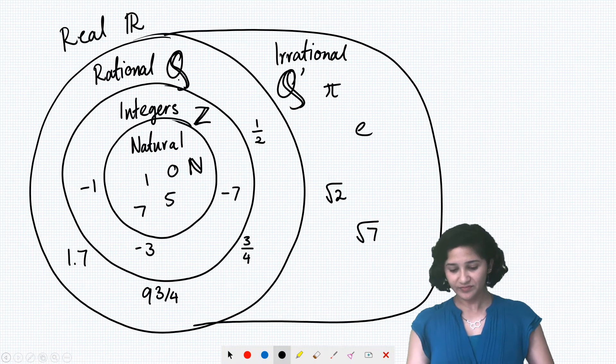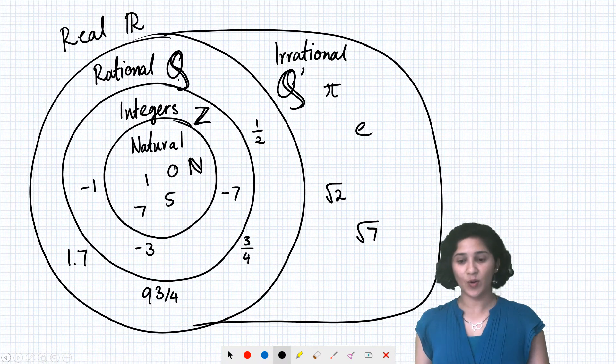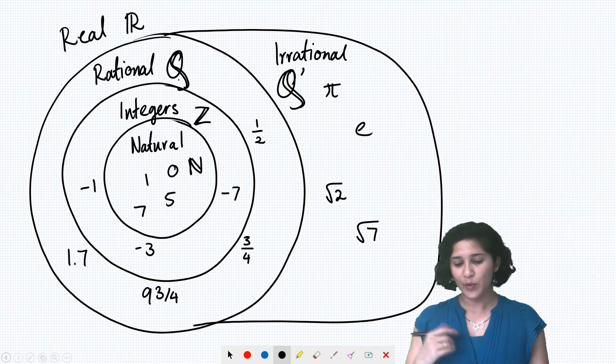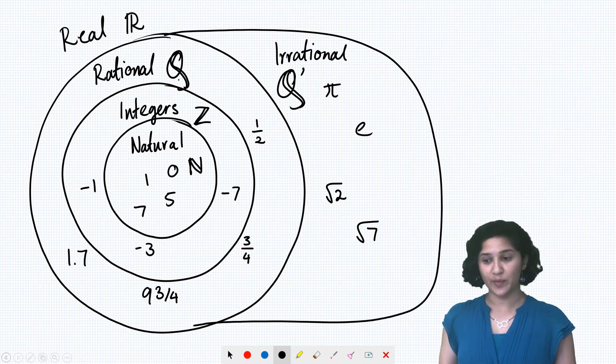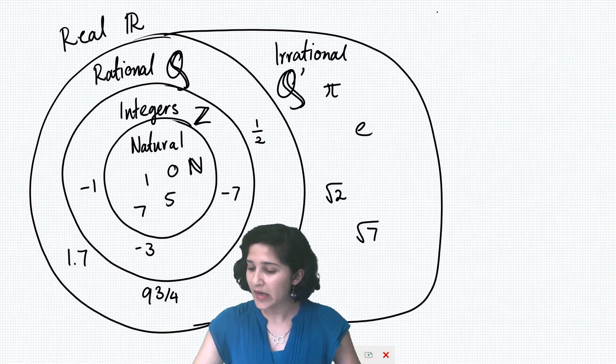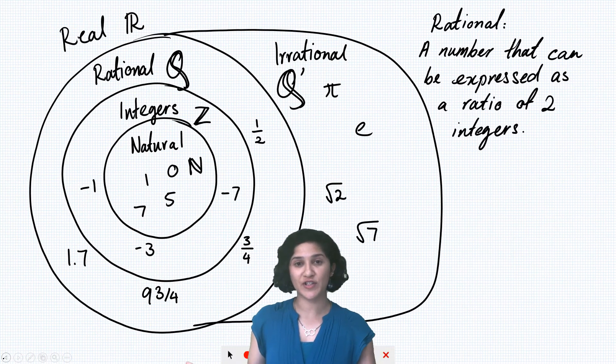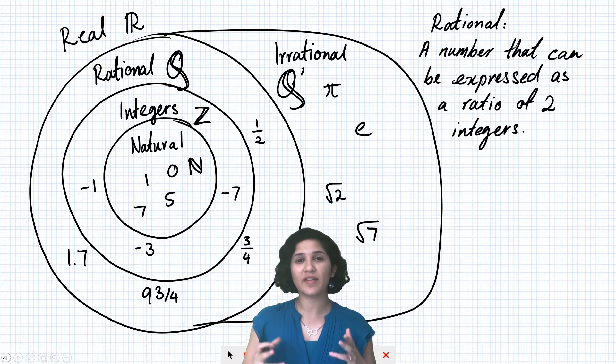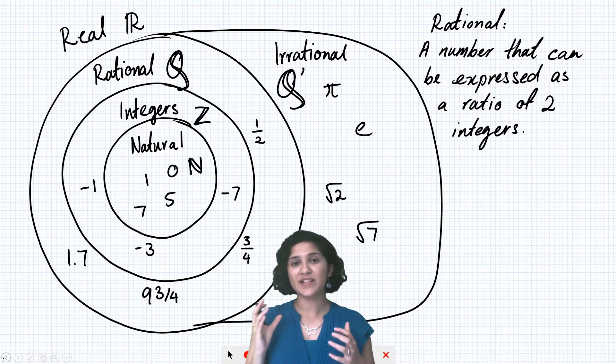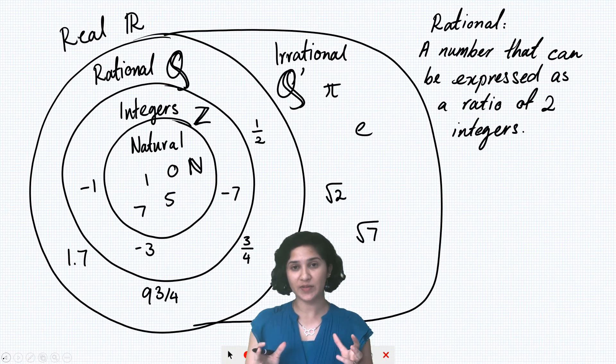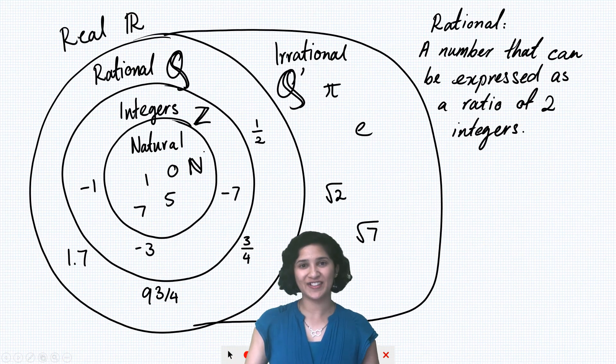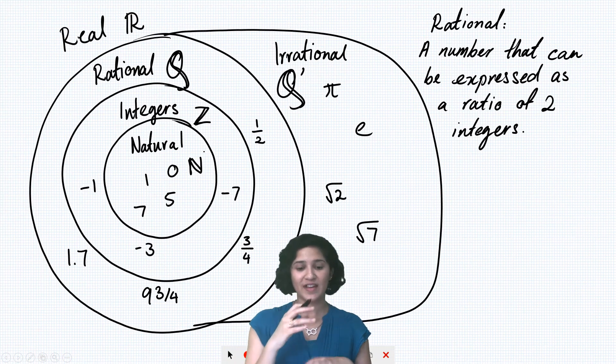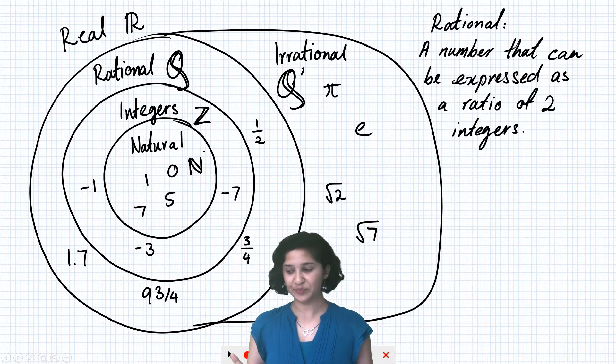So that's basically all the numbers laid out for you. But we need to talk a little bit more about rational versus irrational numbers. So the definition of a rational number is actually a number that can be expressed as a ratio of two integers. So if we take any two numbers from this section and write them as a fraction, then we get a rational number.